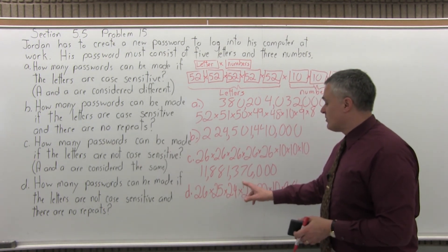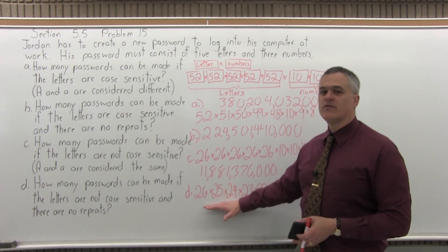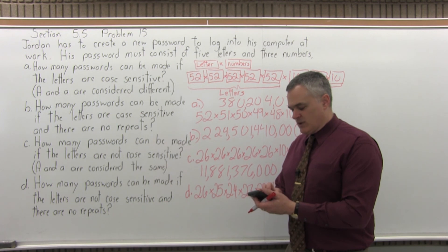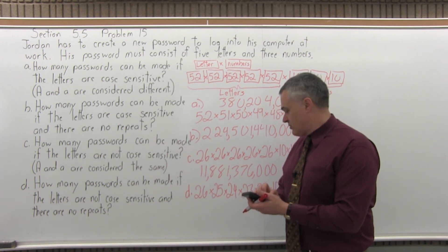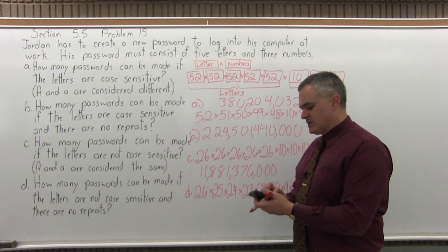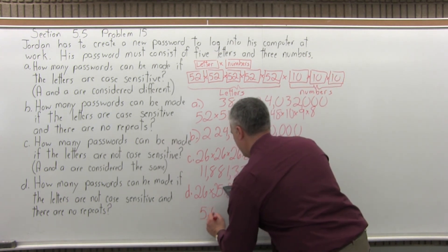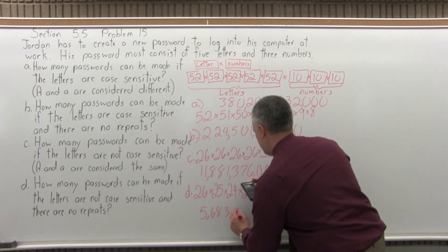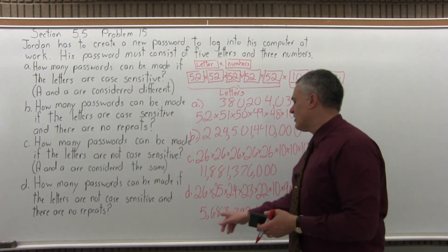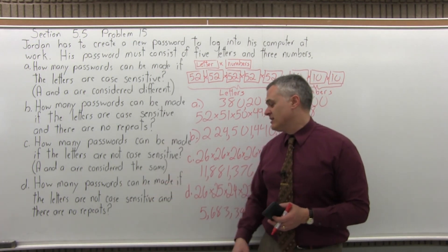So that's what we'd have to multiply out: 26 times 25 times 24 times 23 times 22 times 10 times 9 times 8. On a test or quiz, that's far enough for full credit. But just out of curiosity, what does that multiply out to? 26 times 25 times 24 times 23 times 22 times 10 times 9 times 8 gives a little over five and a half billion different passwords — letters not case sensitive, no repeats.